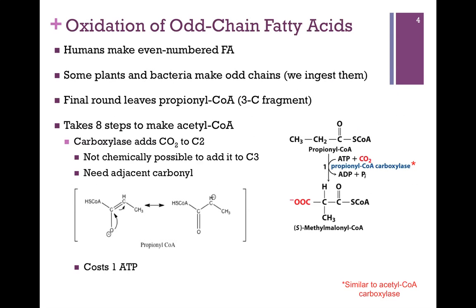What happens in the oxidation of odd-chain fatty acids? As humans, we make even-numbered fatty acid chains, and we'll see why when we look at fatty acid synthesis. But there are plants and bacteria that make odd chains, and they are in our diet, so we need to be able to process them. Our final round will generate a molecule of acetyl-CoA, but we'll also have a 3-carbon fragment, propionyl-CoA, and our next steps are to convert that to acetyl-CoA.